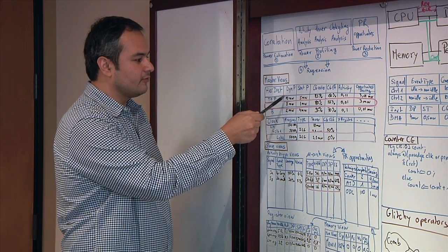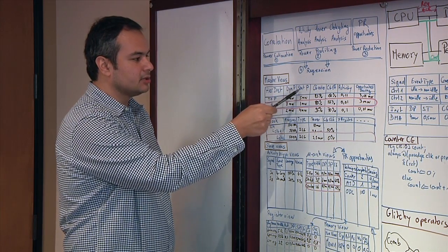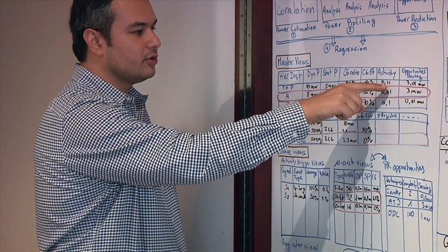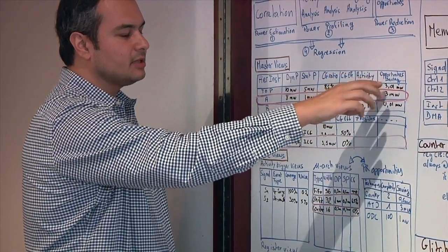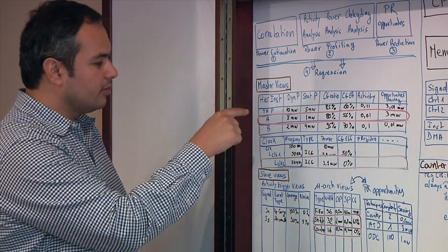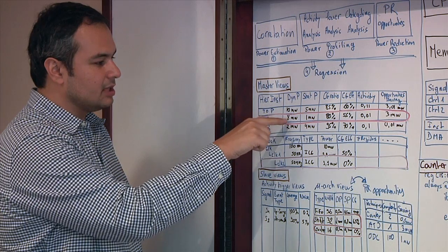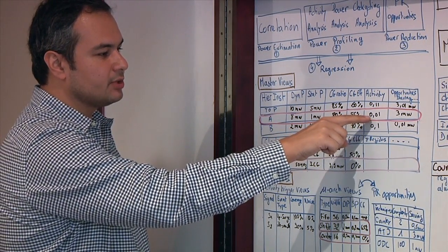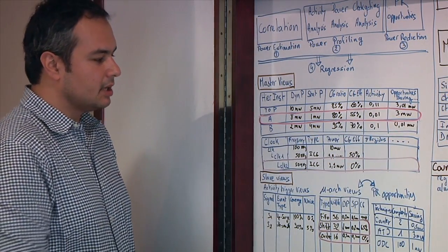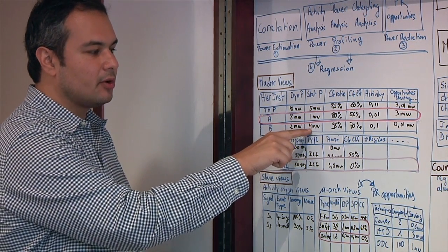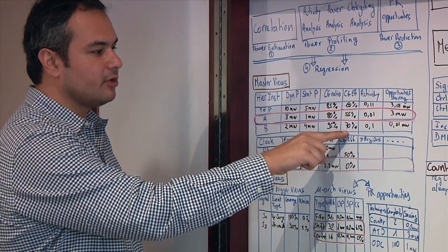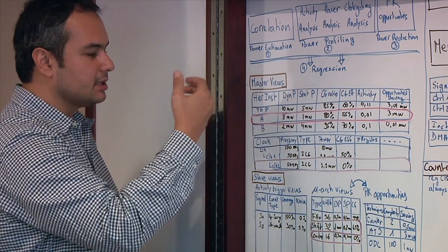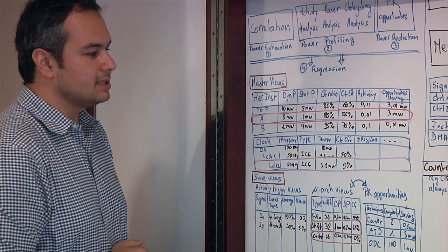For this example, you have a design named top. The design top has two blocks, A and B. For the design top, we have shown the dynamic power of the design, which is 10 milliwatt; the static power, which is 5 milliwatt; the clock gating ratio, which is 85%; the clock gating efficiency, which is 60%; the activity of the top-level design. And we have estimated the potential power saving on that block, which is 3.01 milliwatt. Block A has 8 milliwatt dynamic power, 1 milliwatt static power, 80% clock gating ratio, 55% clock gating efficiency, activity of 0.01, and a potential saving of 3 milliwatt. Block B has 2 milliwatt dynamic power, 4 milliwatt static power, 85% clock gating ratio, 70% clock gating efficiency, activity of 0.1, and potential saving of 0.01 milliwatt.